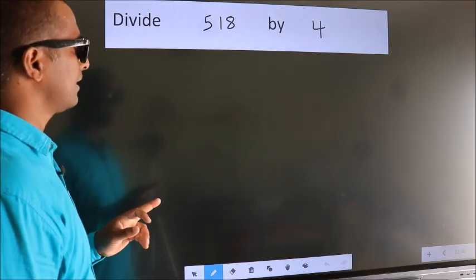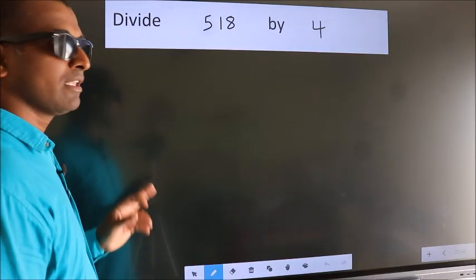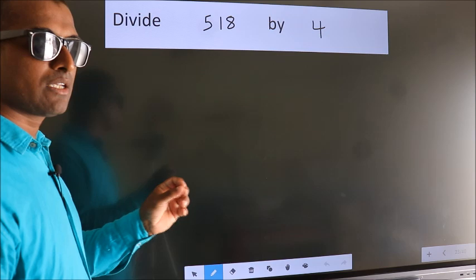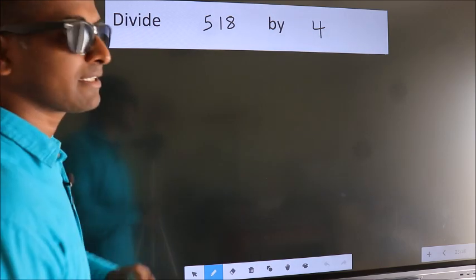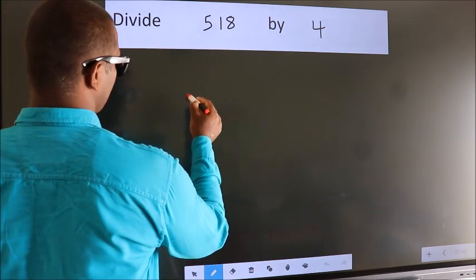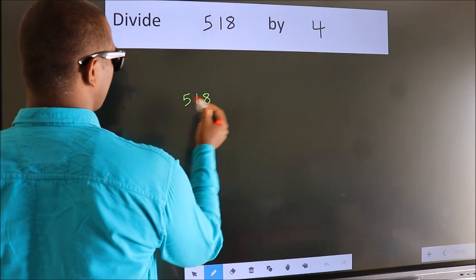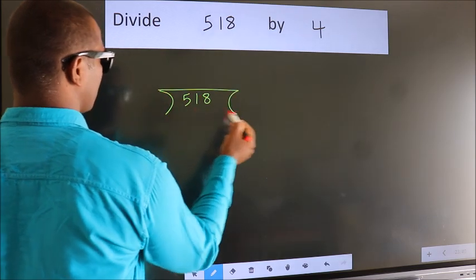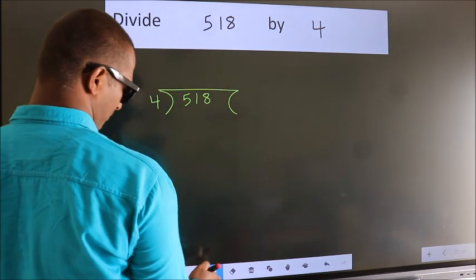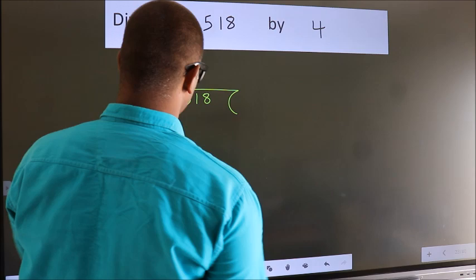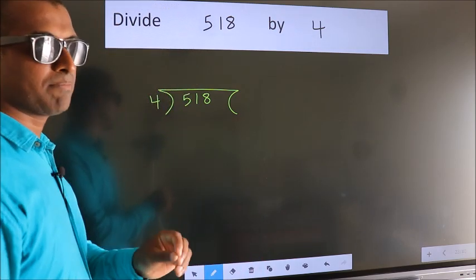Divide 518 by 4. To do this division, we should frame it in this way. 518 here, 4 here. This is your step 1.